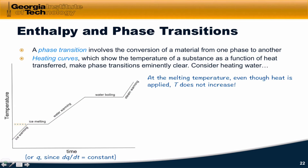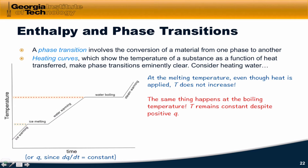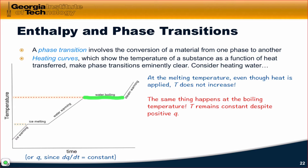A key thing to notice about this heating curve is that at the melting temperature, although we continue to apply heat — moving to the right along this curve — the temperature does not increase. The same thing happens at the boiling temperature: the temperature remains constant despite the fact that we are applying heat to the sample. The heat, in a sense, is going towards causing the liquid to boil or the ice to melt.